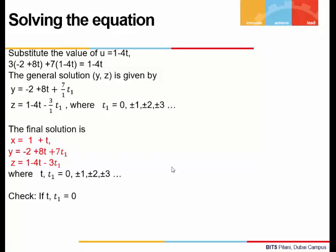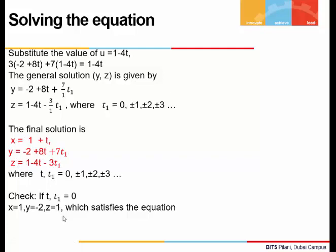Let's check whether the solution is correct. If we take t = 0 and t₁ = 0 and substitute into the three equations, we get x = 1, y = −2, z = 1. Substituting these into the original equation confirms it is satisfied. By giving different values to t and t₁ we get infinitely many different solutions.